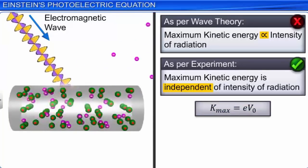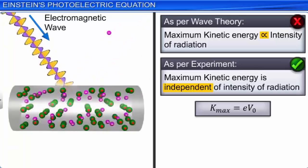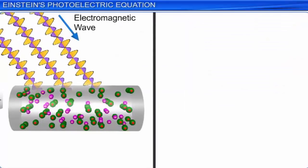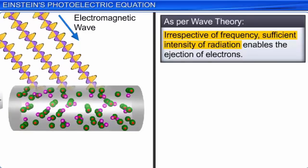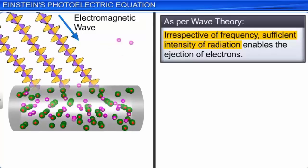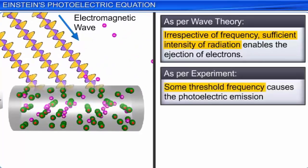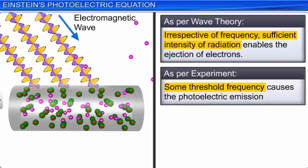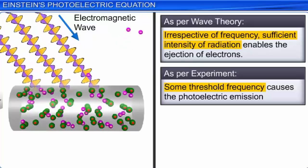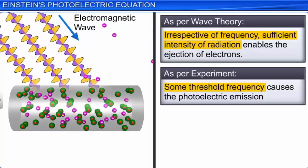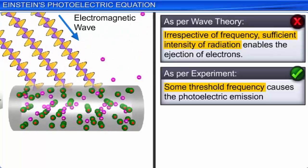The experiment shows that the maximum kinetic energy of the ejected electrons is independent of the intensity of the radiation. Further, according to the wave theory, irrespective of the frequency of the radiation, radiation of sufficient intensity over a period of time should be able to eject the electron from the metal surface. But photoelectric effect experiments show that for every metal surface there exists a certain minimum frequency, called the threshold frequency ν₀, required to just eject the electrons from the metal surface irrespective of the intensity of the radiation. This again contradicts the wave theory.